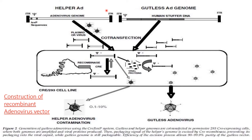The helper adenovirus genome consists of an inverted terminal repeat, a loxP sequence, and the adenovirus genome. The gutless adenovirus genome consists of inverted terminal repeats on both sites, cis terminal repeats, and a human stuffer DNA — the gene of interest. These two genomes are co-transfected into the Cre-293 cell line, where both start to amplify. The gutless adenovirus contains the gene of interest.